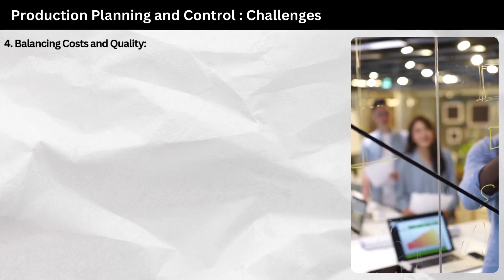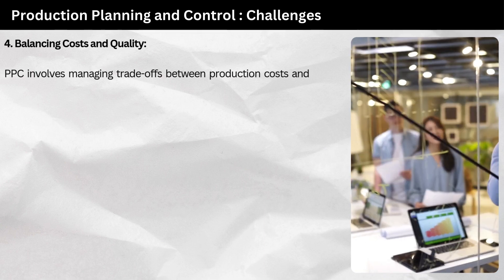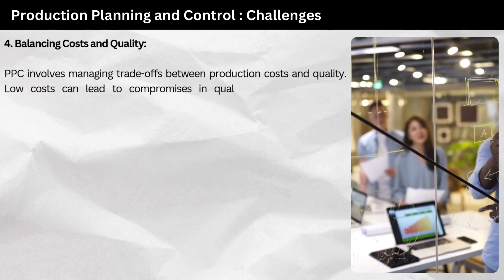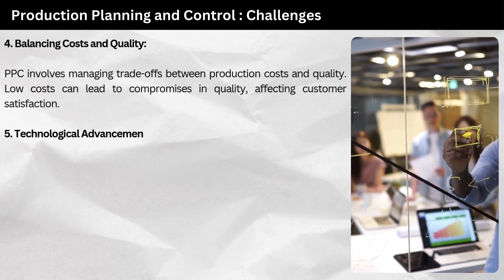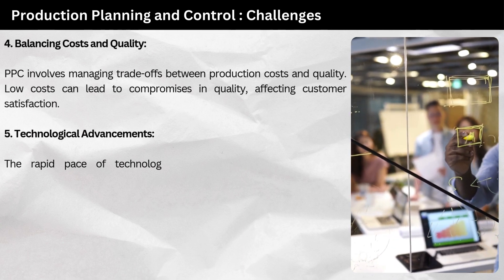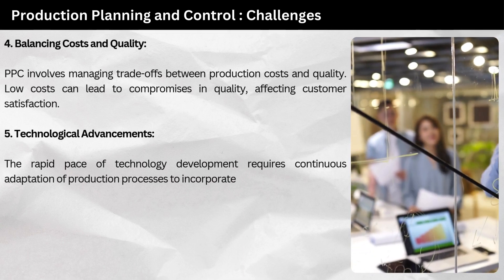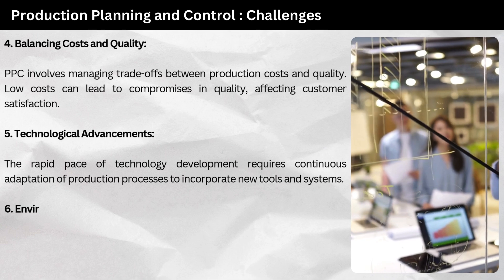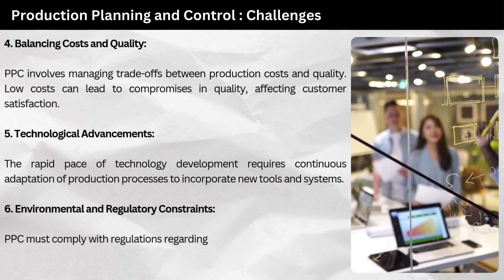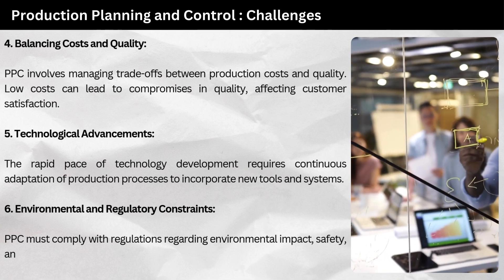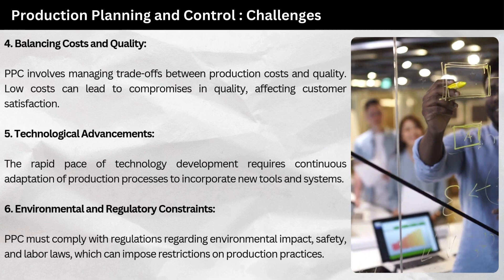Fourth, balancing costs and quality: PPC involves managing trade-offs between production costs and quality — low costs can lead to compromises in quality, affecting customer satisfaction. Fifth, technological advancements: the rapid pace of technology development requires continuous adaptation of production processes to incorporate new tools and systems. Sixth, environmental and regulatory constraints: PPC must comply with regulations regarding environmental impact, safety, and labor laws, which can impose restrictions on production practices.